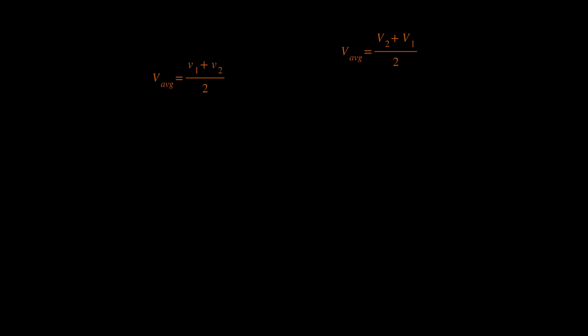I'll use the concept of average velocity two times here to derive our next two formulas. The average velocity is v1 plus v2 over 2, and using our previous result for v2, we see that the average velocity is a times delta t plus v1 plus v1, all over 2. And using the formula that says that the average velocity times delta time equals total distance, by expanding the numerator, the distance is equal to v1 delta t plus a delta t squared over 2.